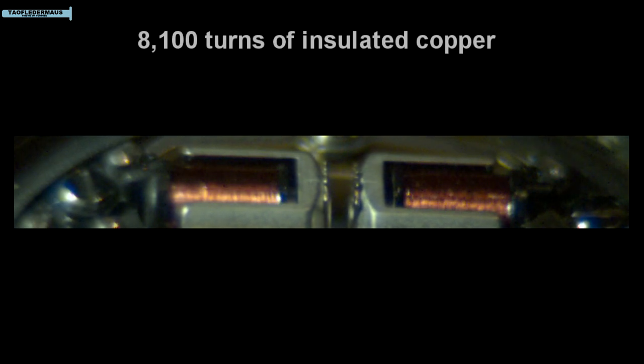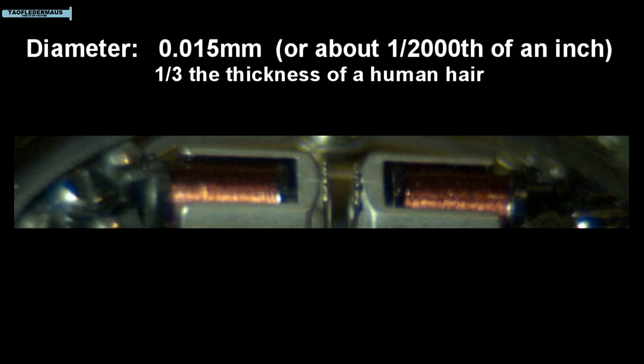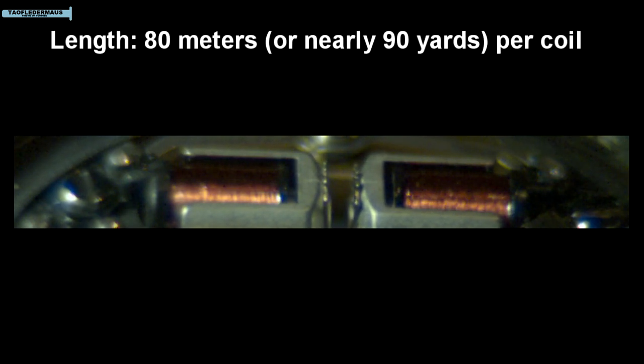Here we see the tuning fork cups being powered by the two very small coils. Each coil has 8,100 turns of insulated copper wire. The diameter of the wire is only one third the thickness of a human hair. And if you unraveled one of those coils it would reach nearly 90 yards. And Bulova actually manufactured this wire themselves instead of farming it out.